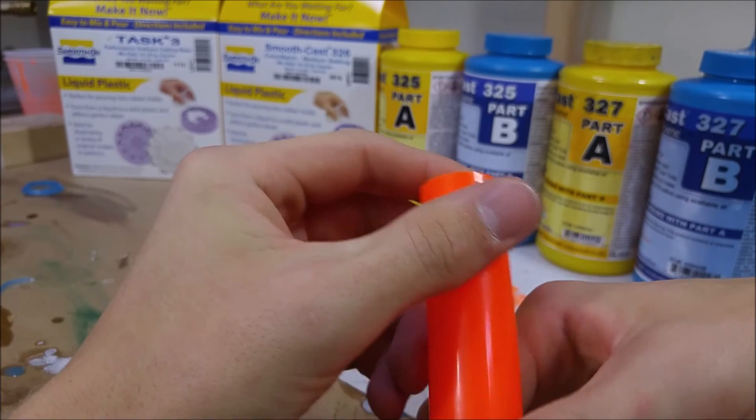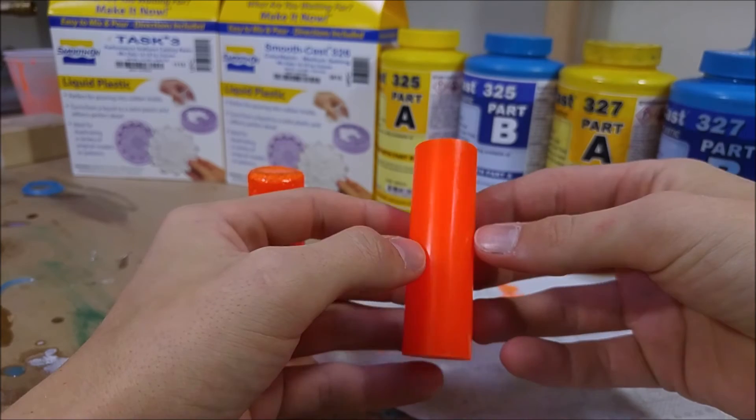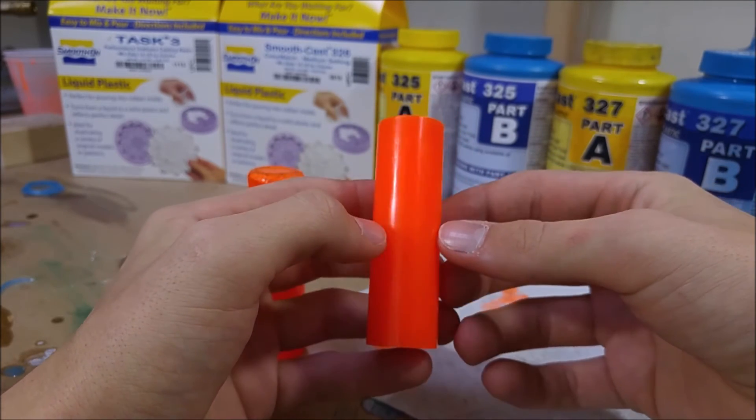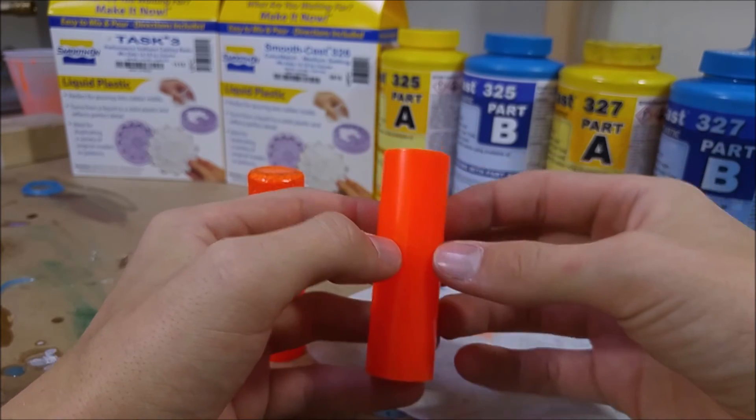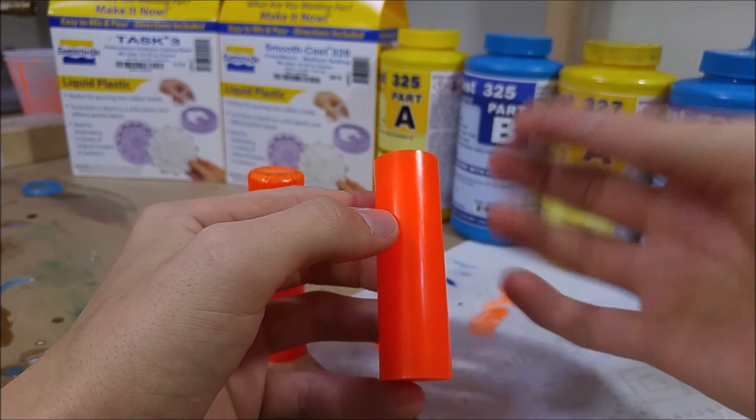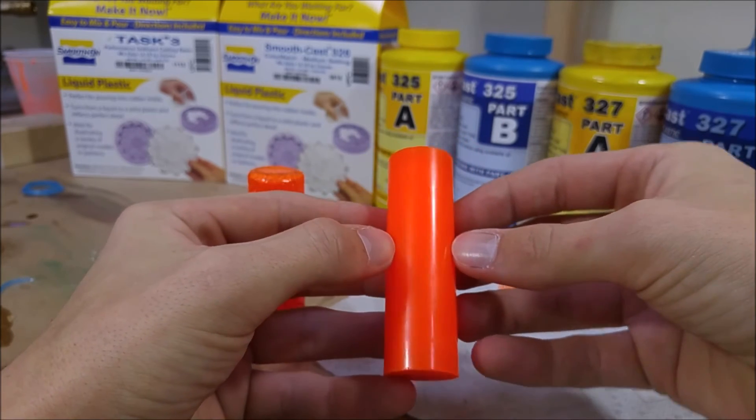In this case, this is a casting of Smooth Cast 327. It just happens to be one of their varietals. They make Smooth Cast 325, 326, and 327. The smaller numbers cure a lot faster, but they have a very short pot life. The larger numbers cast with a much longer pot life.